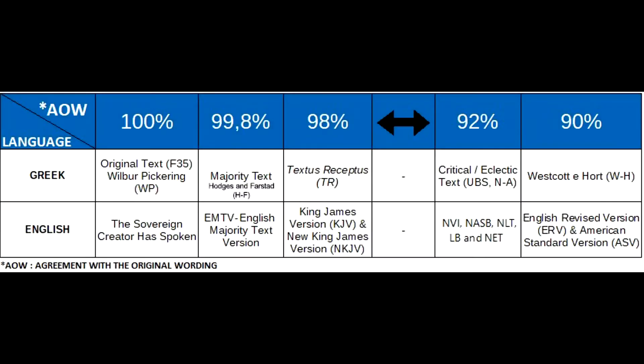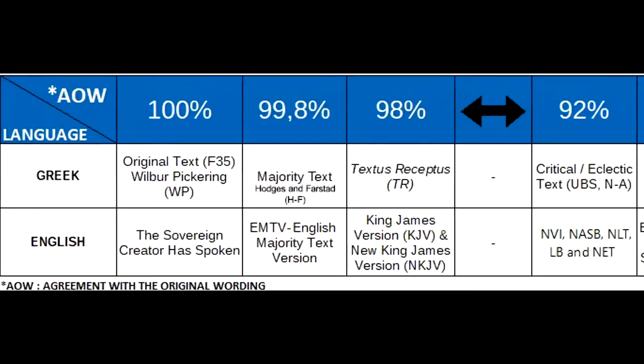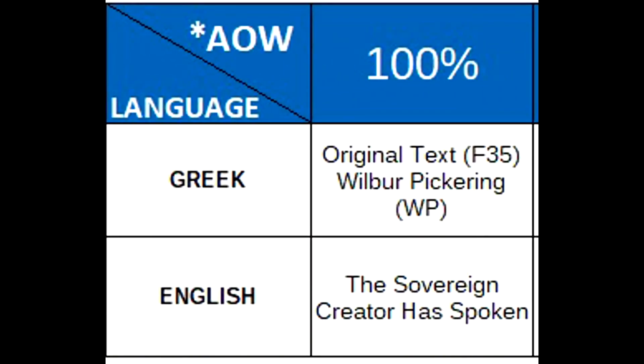The graphic that you see now on your screen shows the printed Greek text that is used by the editors, and below we have the English versions that are the result of the Bible translations on the market. Even though we are talking about Bibles, here we are only talking about the New Testament, as it is the only part of the Bible that was written in Greek. So at 100% in the graphic, we have the Wilbur Pickering text — the Family 35 text. This is the original text.